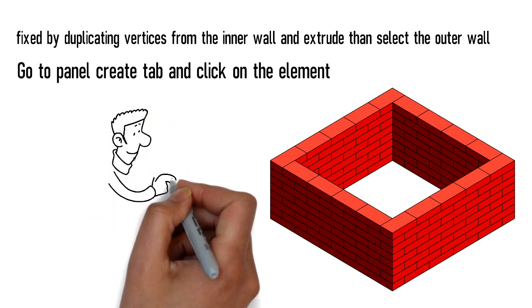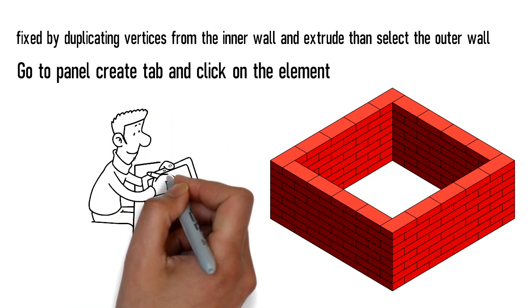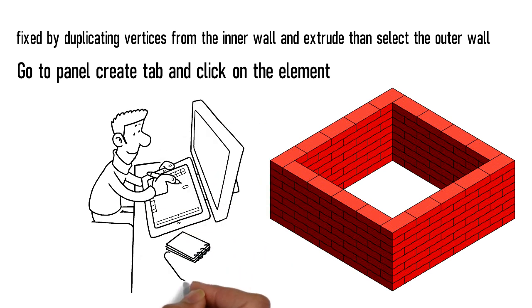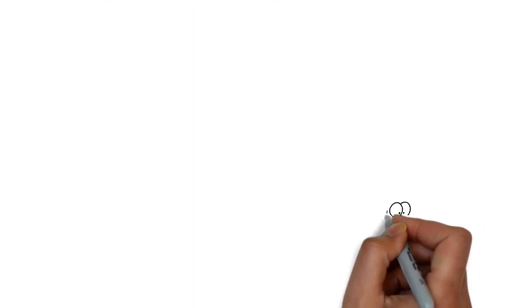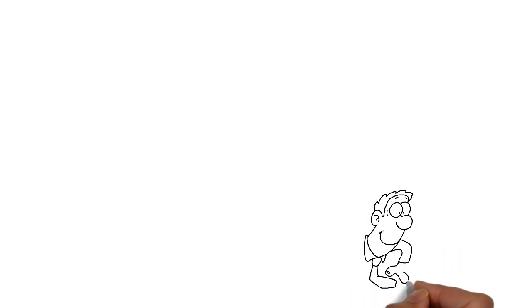3D computer graphics, also known as three-dimensional computer graphics, are computer graphics that conduct calculations and produce visuals using a three-dimensional representation of geometric data stored in the computer. The resulting images can be saved for later viewing or viewed in real-time.